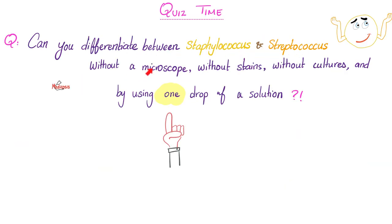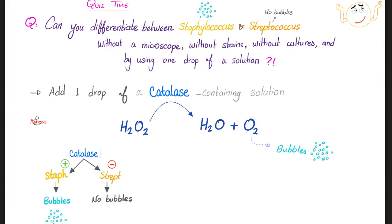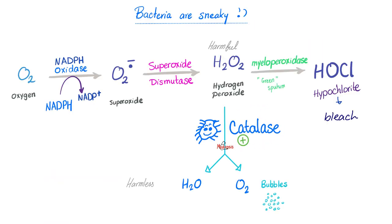Can you differentiate between staph and strep without a microscope, stains, or cultures — using only one drop of a solution? Yes — this is the catalase test. If you add hydrogen peroxide: staph is catalase-positive, so it produces water and oxygen, giving you bubbles. Strep gives no bubbles. Catalase helps bacteria destroy H₂O₂ — the harmful — and convert it to water and oxygen — the harmless. The bacteria is protecting itself from your immune defenses.